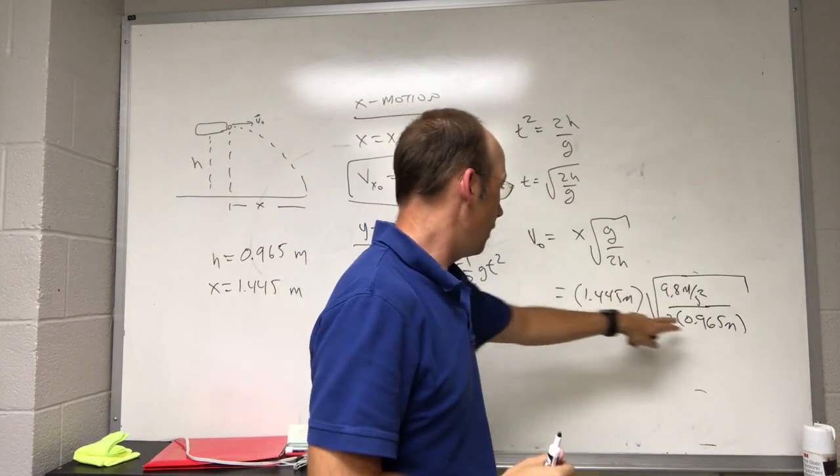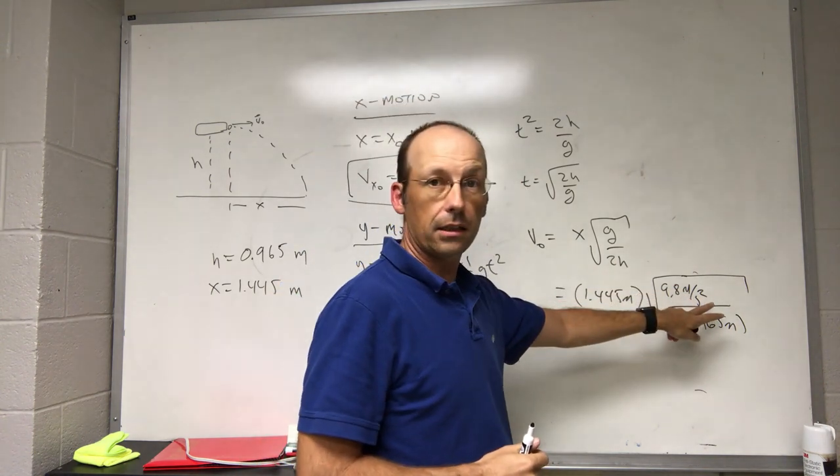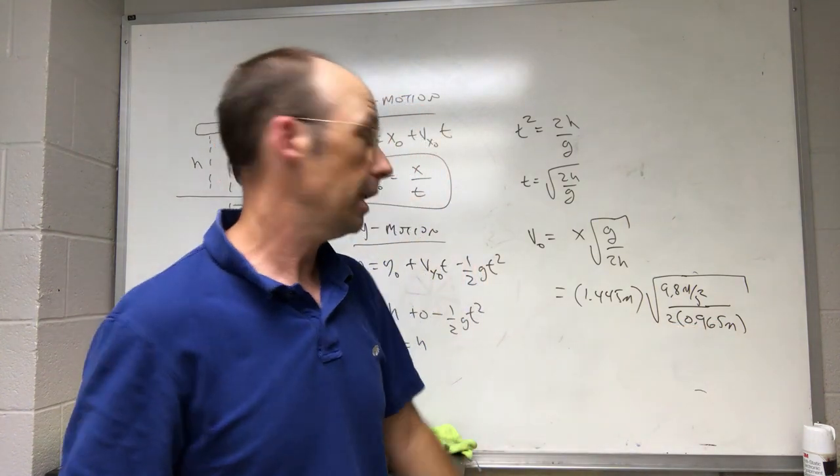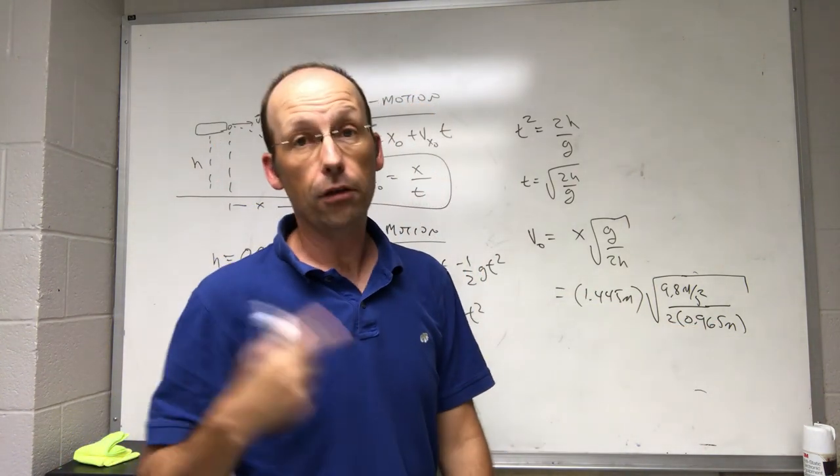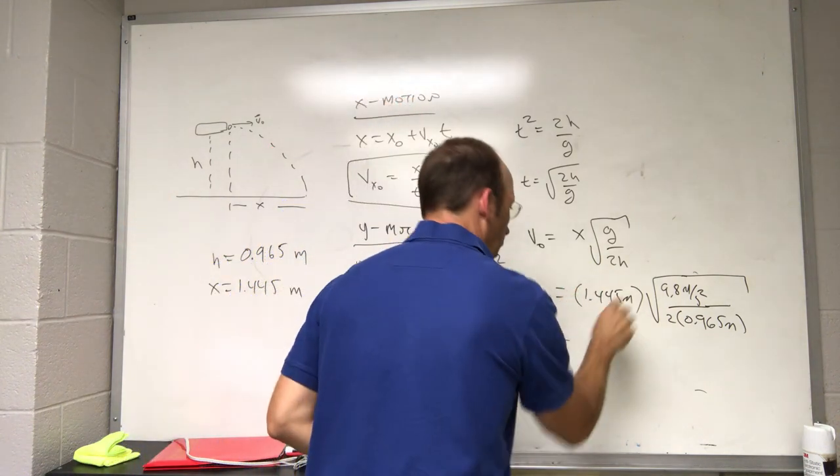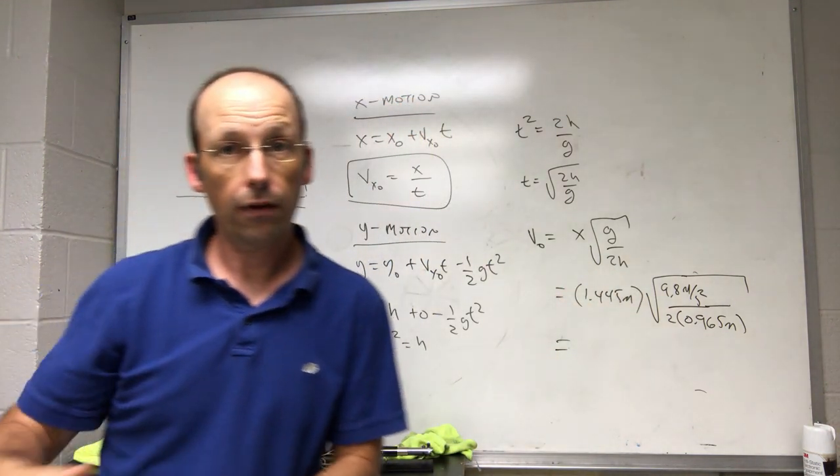Okay, so let's just check real quick. This is going to be 1 over seconds in the square, 1 over seconds squared. I take the square root, I get 1 over seconds. I multiply by m, I get meters per second. I get the units for speed.